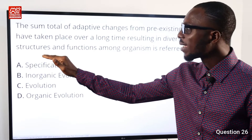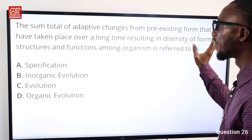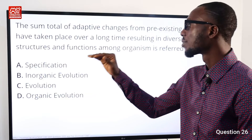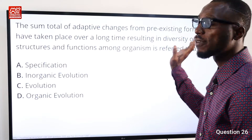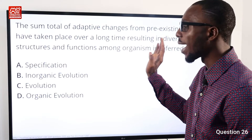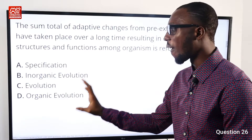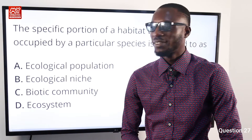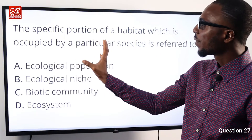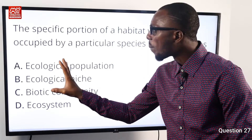Question 26: The sum total of adaptive changes from pre-existing forms that have taken place over a long time, resulting in diversity of forms, structures, and functions among organisms, is referred to as organic evolution. So option D is correct.